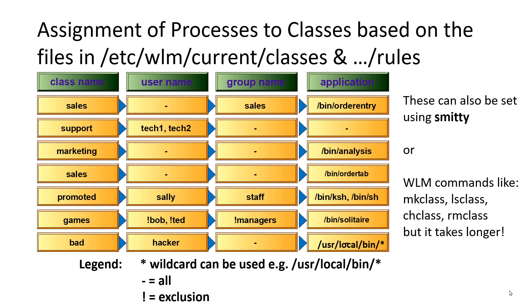We can classify processes based on several criteria. On the left-hand side we have the class names. We can classify by username — who started the process. So if you have a DBA user, anything they start goes into the relational database class. We can also do it by group name — if you have a whole group of people doing database administration, you just name the group. Another way is by application using the rules file: you specify particular binary programs, and if they start up, they go into a particular class. We can put wildcards in there, such as /usr/local/bin/*, to pick up anything in that directory.